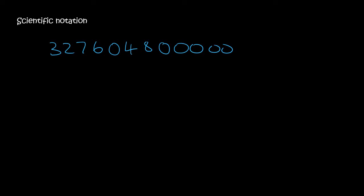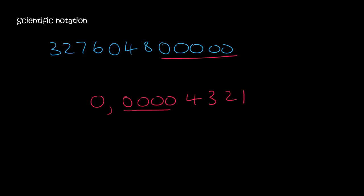Hey guys, so by now you've got a fairly good idea of how scientific notation works, but now I need to explain a few more things. If you get a number that's got a whole lot of zeros at the end or at the beginning, so for example if I had a number like this, where you've got a whole lot of zeros at the beginning, then we need to be careful. Let me show you how it works.